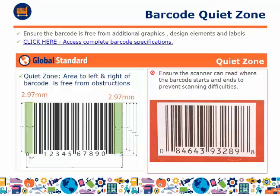It is also important to ensure that your barcode is free from additional graphics, design elements, and labels to ensure it can be read easily. The global standard for the quiet zone is that the area to the left and right of the barcode must be free from obstructions, shown here by the green bars. These standards ensure that the scanner can read where the barcode starts and ends. In this example, there is no quiet zone because of the red background and red packaging color.